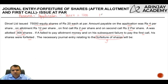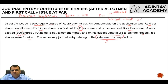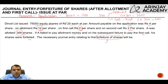What was due from A but not received? The amount due from him was at the time of allotment and at the time of the first call. On the first call he had to pay rupees 2 per share, which means 2 into 300, or rupees 600. On allotment he had to pay rupees 12 per share, which means 12 into 300, or rupees 3,600.